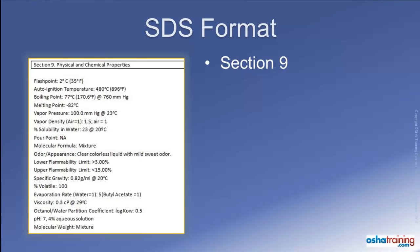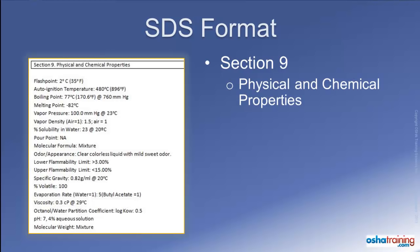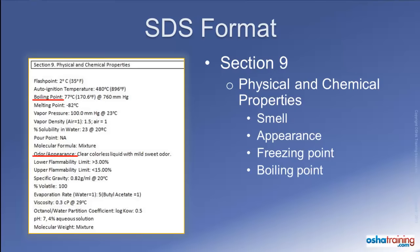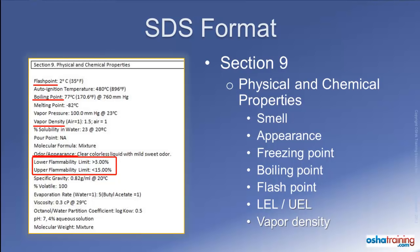Section 9 of the safety data sheet identifies all applicable physical and chemical properties associated with the product. While most workers may not care about this type of information, safety managers and engineers may need to know specifics including what the product smells and looks like, at what temperature it freezes or boils, at what temperature it emits enough vapors to catch on fire or cause an explosion, how much vapor must be present at the point of ignition, whether vapors are heavier or lighter than air, and when dealing with corrosive products, the pH of the chemical.